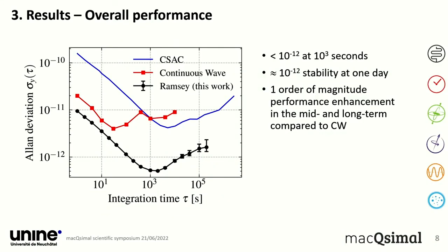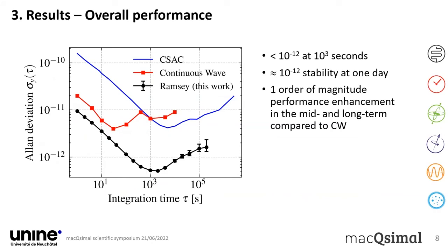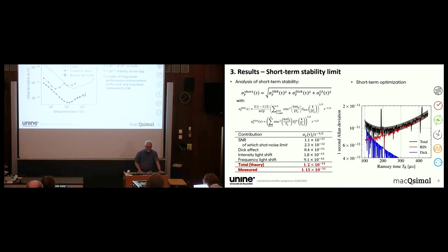If we look at the clock stability that we can obtain with this, the black dots show you the clock stability in Ramsey mode as we measured for these experiments. The red data is the same clock operated in continuous wave operation, and the blue line gives you the stability of the MicroSemi commercial CSAC clock just as a benchmark unit. What you can see is that the stability is roughly 10^-11 at one second. It goes down well below the 10^-12 level at around 1,000 seconds integration time, and at one day, so 10^5 seconds, we are on the level of 2×10^-12. This is really one order of magnitude improvement compared to the CW operation, and quite a nice result.